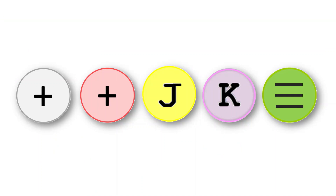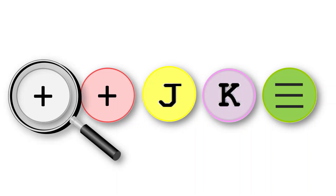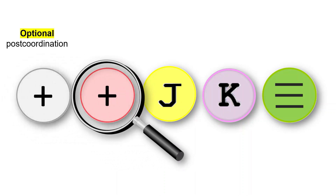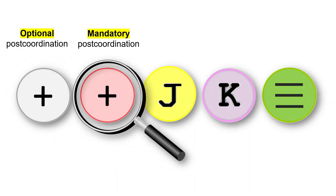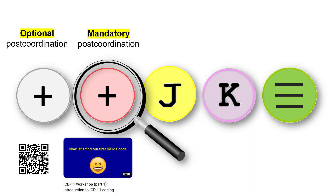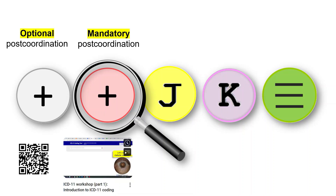Back to our five icons. We now understand what the first two icons mean. A gray plus means optional post-coordination — you can add more detail to your diagnosis. A red plus means mandatory post-coordination — you must add more detail to your diagnosis. You can find out more about post-coordination in another video on this channel.